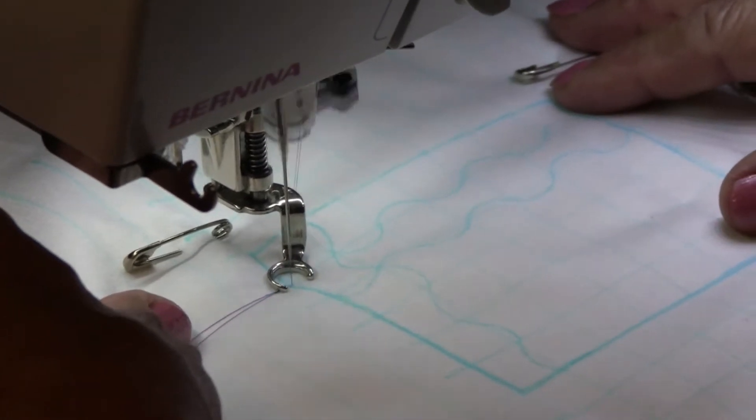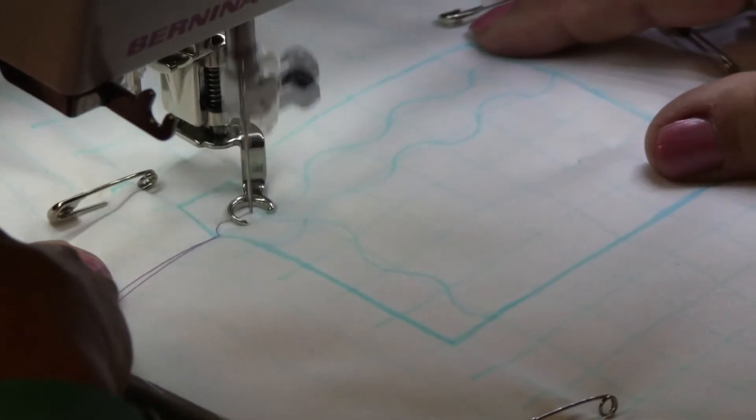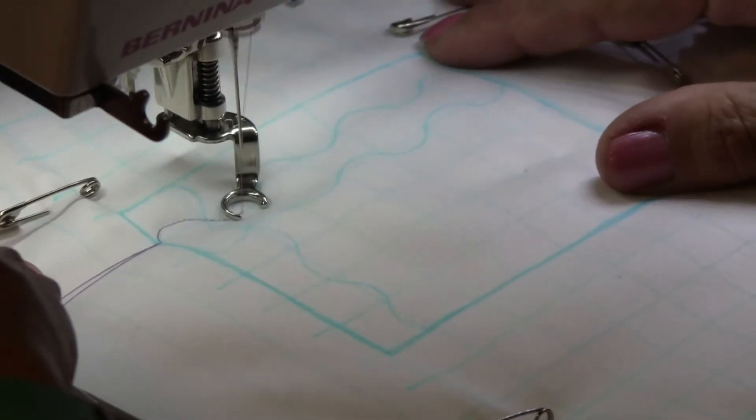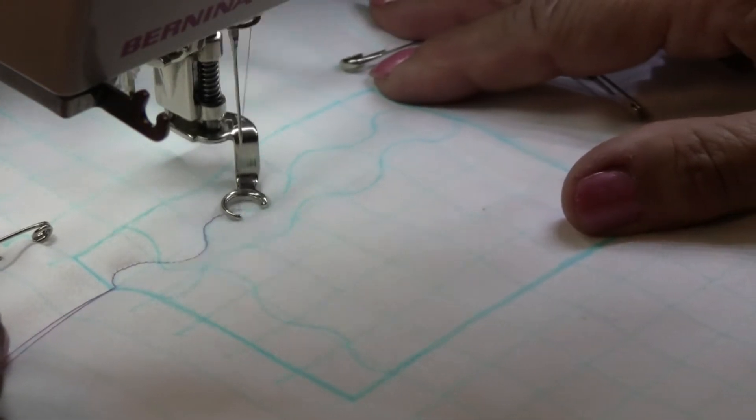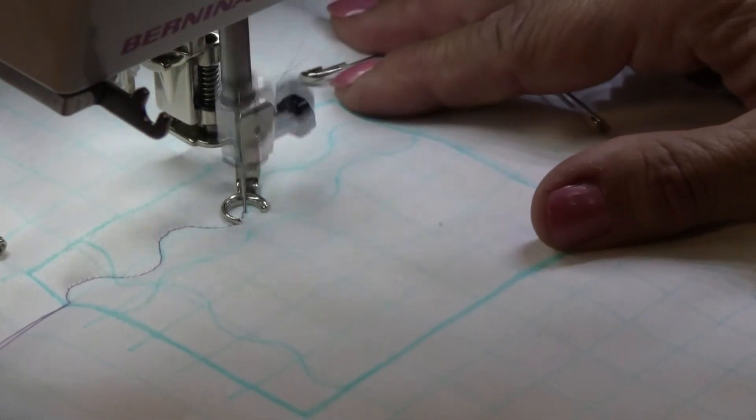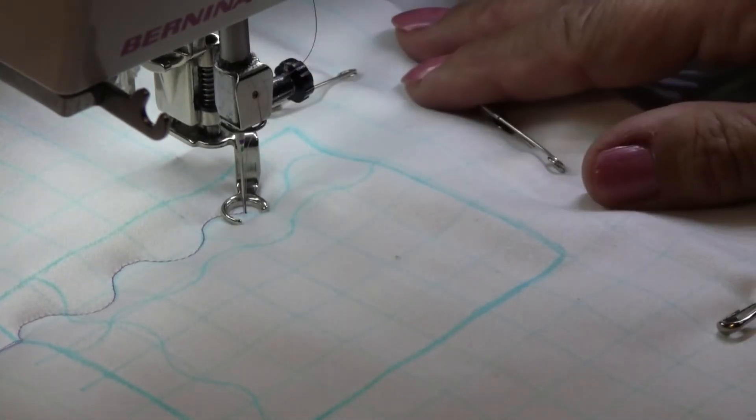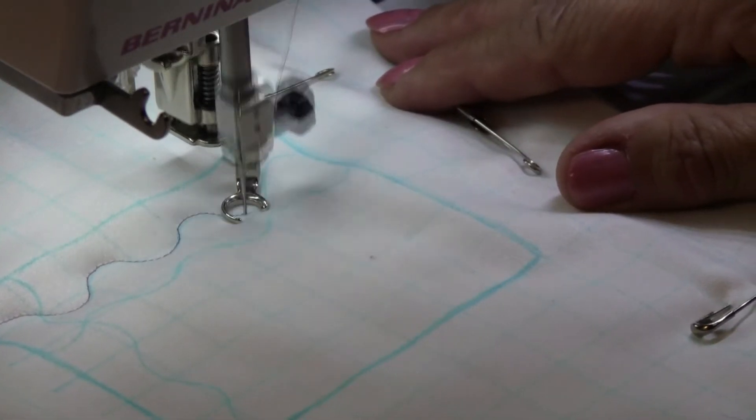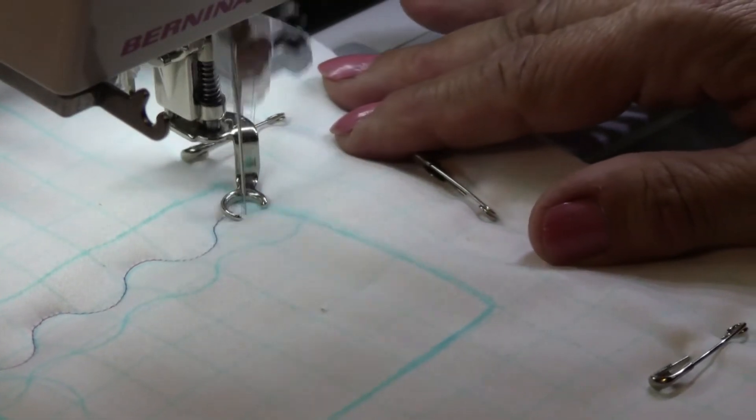All right, so we're going to get started on our first horizontal line. So you just do an arc. You want to aim for those intersections. That's really crucial in making this design successful. Right now I'm just following my marked lines.